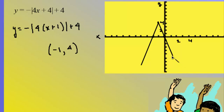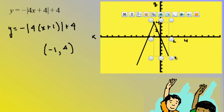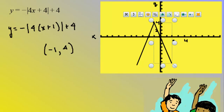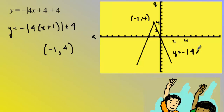Now that I have those points I can use my straightedge to form the vertex and draw the rays of my absolute value. The vertex is at negative one, four, and this is the graph of the equation y equals negative absolute value of four x plus one plus four.